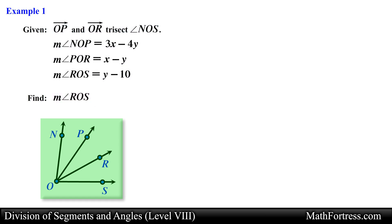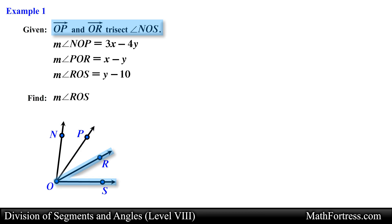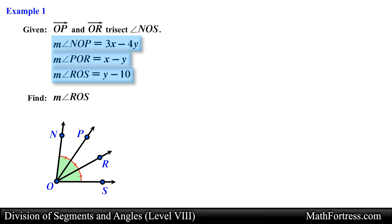Let's start the problem by labeling the diagram with the given information. We know that ray OP and ray OR trisect angle NOS. This means that angle NOP, angle POR, and angle ROS are all congruent to one another, so let's draw a single arc mark for each of these angles. We are also given an algebraic expression in terms of x and y for these same angles, so let's mark them in the diagram.